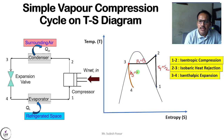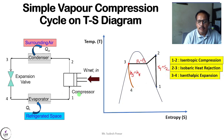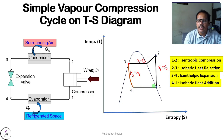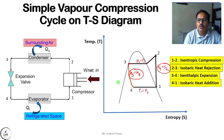These relations are very important for solving numericals: always write H3 equals H4 and S1 equals S2. Process 4 to 1 takes place in the evaporator and is an isobaric heat addition process. Since it is inside the dome it looks similar to an isothermal process, but it is actually isobaric. On the TS diagram it appears as a horizontal line inside the dome, with P1 equal to P4.